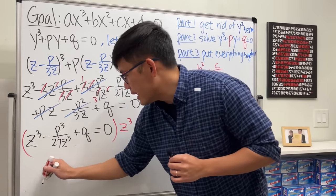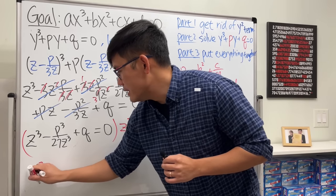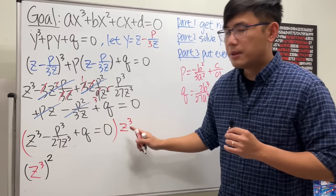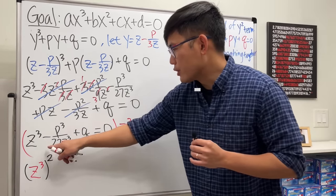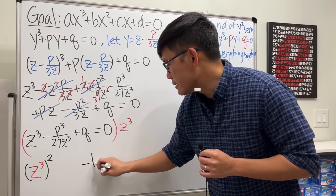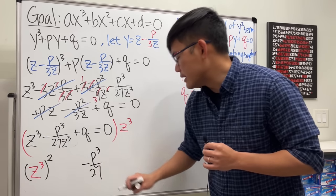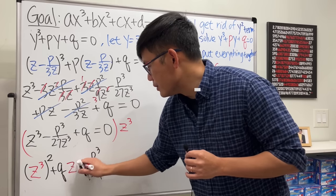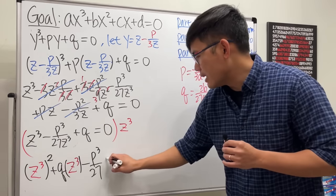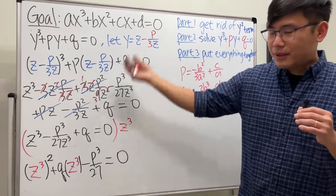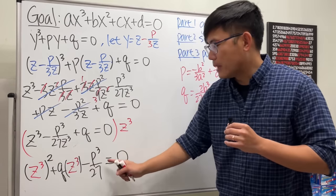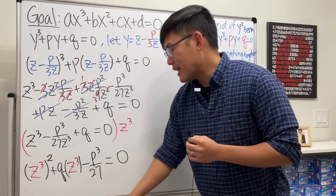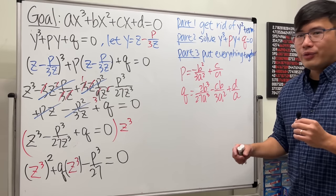Multiplying everybody by z³: we get (z³)² + q·(z³) - p³/27 = 0. Look at that — this is a quadratic equation in terms of z³! And how do we solve that? We use the pq formula from earlier.